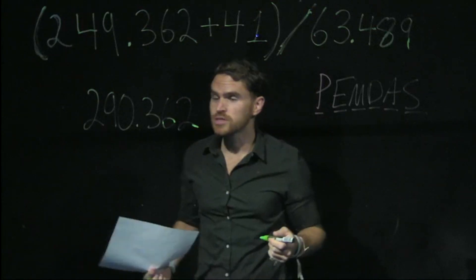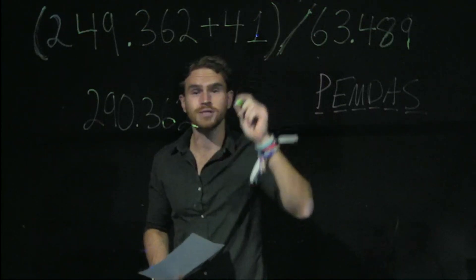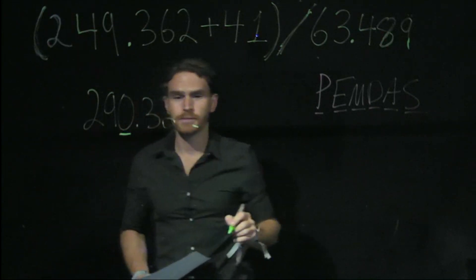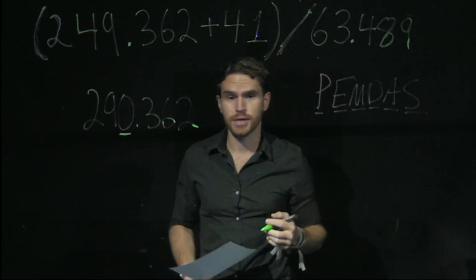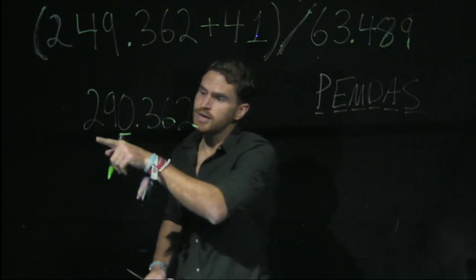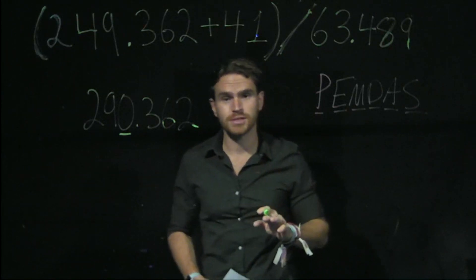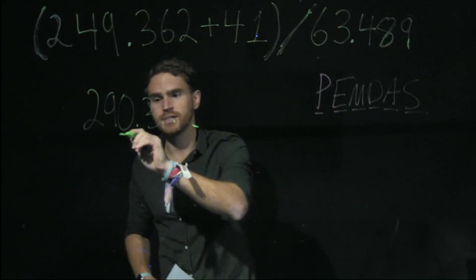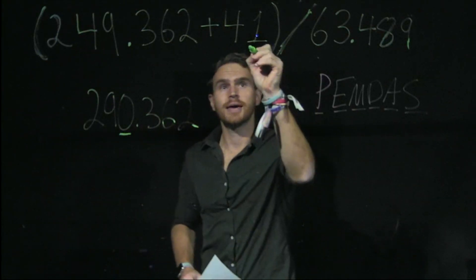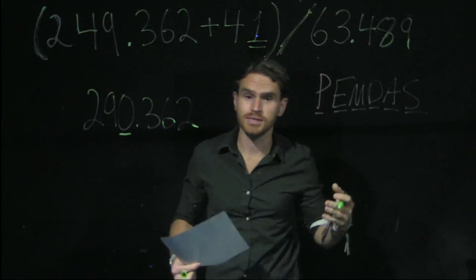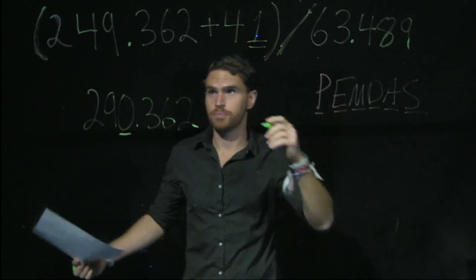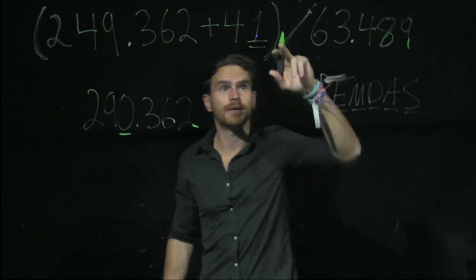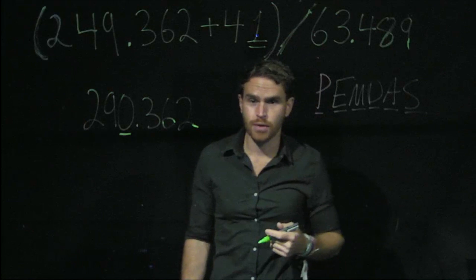In our two values that we added together, the one with the lowest number of decimal places is 41, which is in the ones place. So I'm going to go to my new value that I just calculated and put an underline underneath, because that lets me know that even though I'm going to keep all of these values and not round until the very end, the last significant digit is going to be in the ones place. The .362 we can't keep because those decimal places don't exist in the other value we're adding.